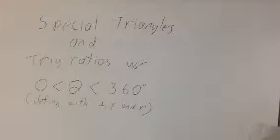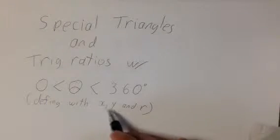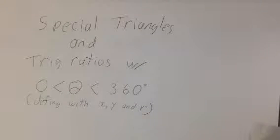We're looking at special triangles and trig ratios of angles between 0 and 360 degrees. To get trig ratios of angles greater than 90 degrees, we define the trig ratios using x, y, and r instead of the traditional opposite, hypotenuse, and adjacent.